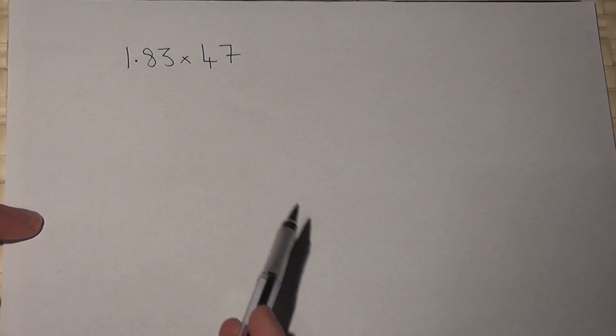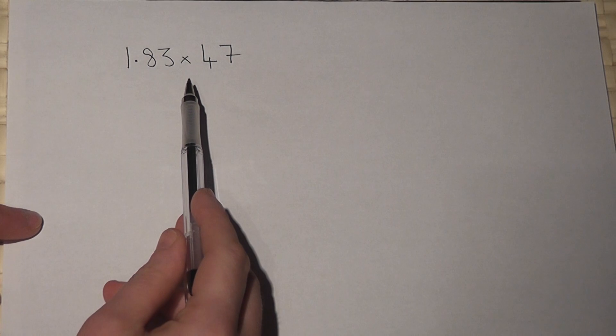This video looks at a way to multiply a decimal by an integer, in this case 1.83 times 47.